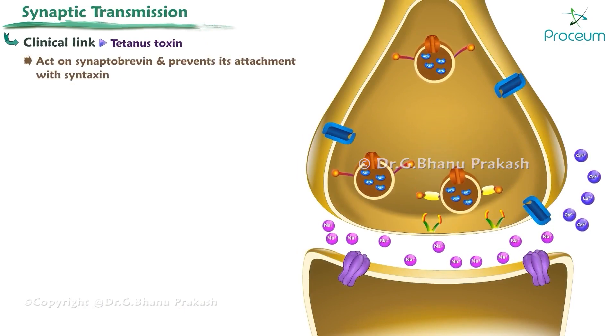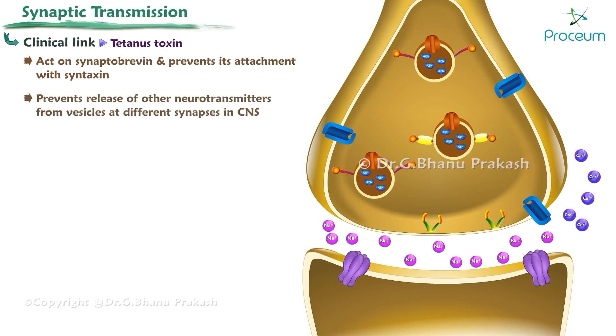Tetanus toxin acts on synaptobrevin and prevents its attachment with syntaxin. Tetanus toxin prevents release of neurotransmitters from vesicles at different synapses in the CNS, and therefore produces spastic paralysis.